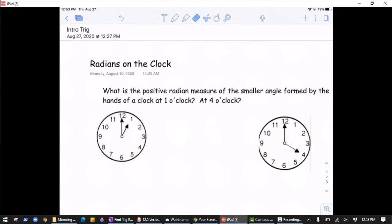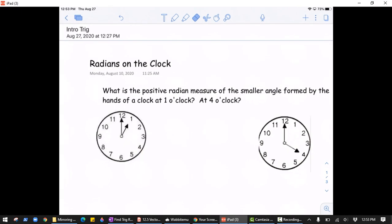Alright, so in this video we're just going to get some practice with radians on a clock. So this says, what is the positive radian measure of the smaller angle formed by the hands of a clock at 1 o'clock and then at 4 o'clock?